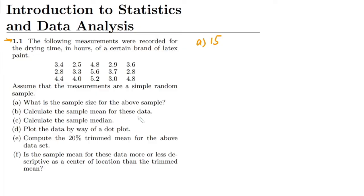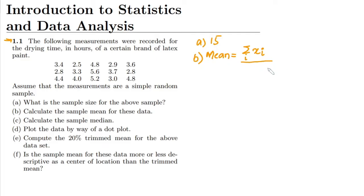In part b we have to calculate the sample mean for this data. As I have previously shown, to find the sample mean we sum all the data points x_i and then divide by the number of items n. Here we have n equal to 15.